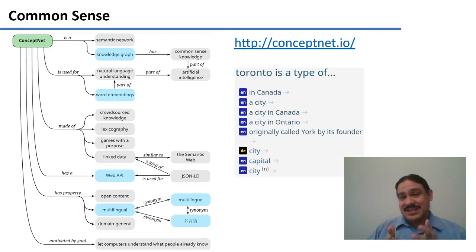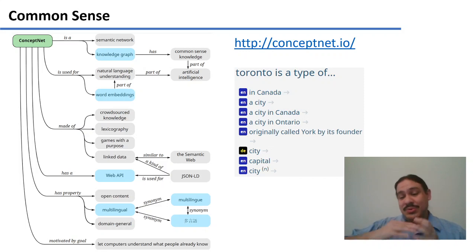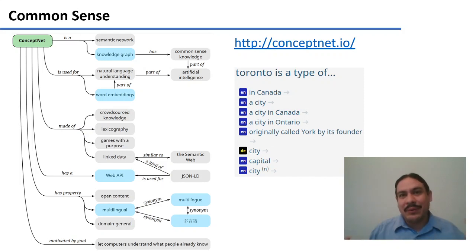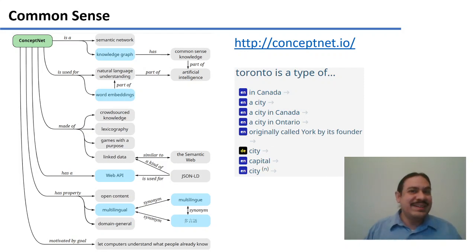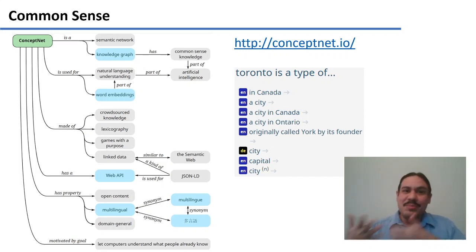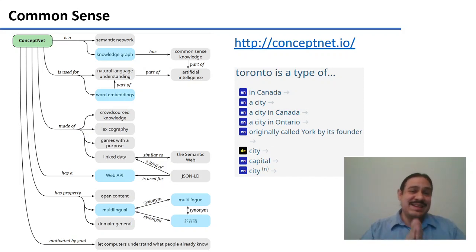There are things that are never going to be in the text, no matter how much text you throw at Watson or Wolfram Alpha or any of these systems. There are things that humans just don't write because they're so obvious — we call these common sense. For example, that a lemon is sour, or that pizzas are commonly found on a plate and not on the floor or on a tree, and evidently that Toronto is a type of something in Canada. So people have created crowdsourced databases for precisely this kind of situation.